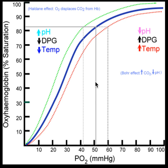Since we've already covered the basics of the hemoglobin dissociation curve, let's talk about playing around with this line — specifically, left shifting and right shifting the blue line that you see right there. You're going to hear that terminology: a left shift and a right shift.